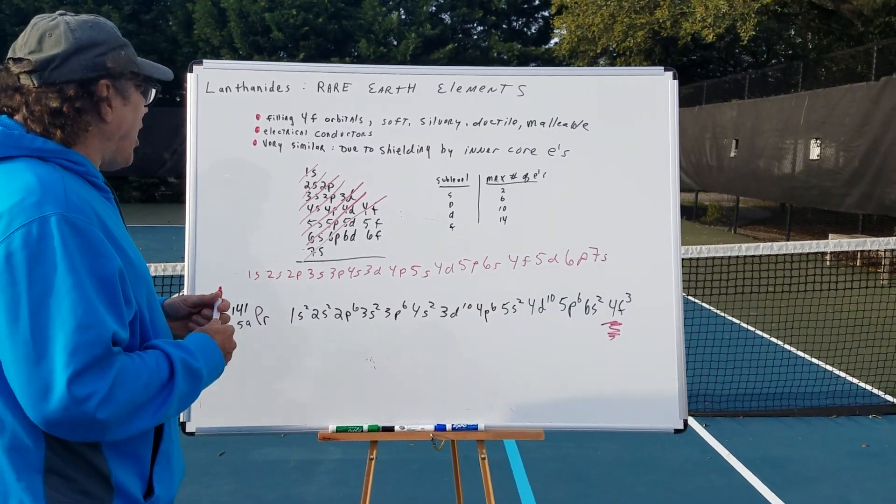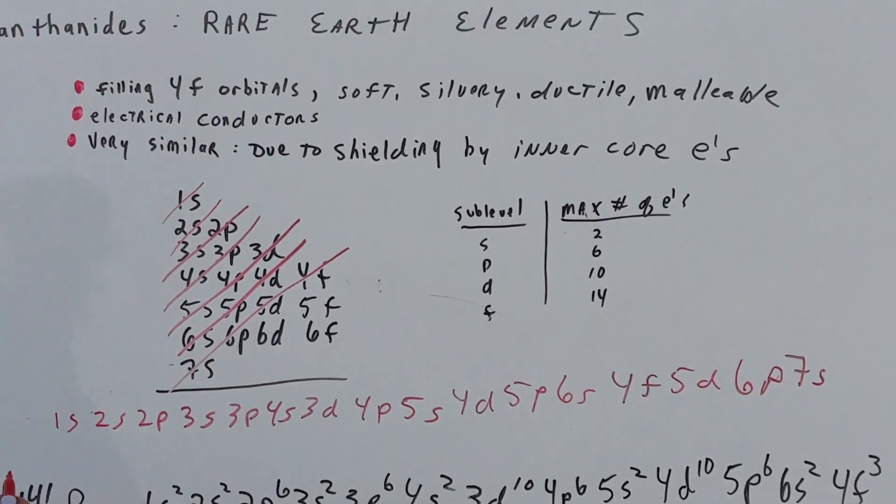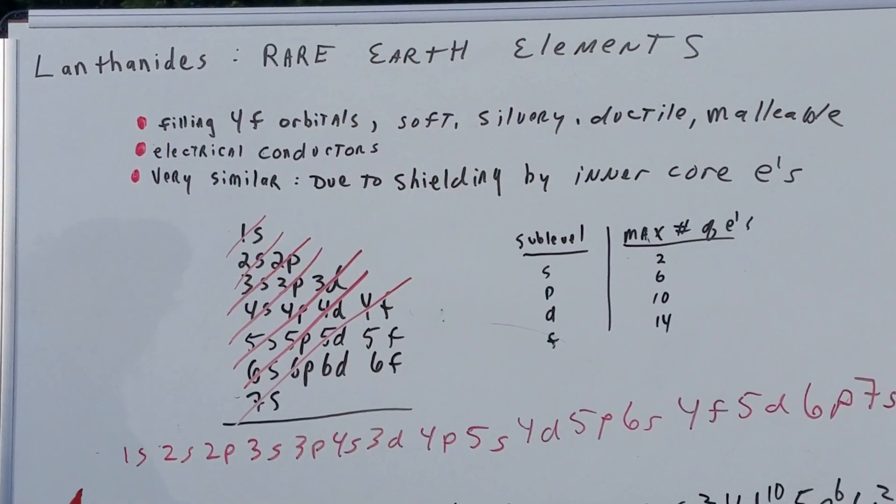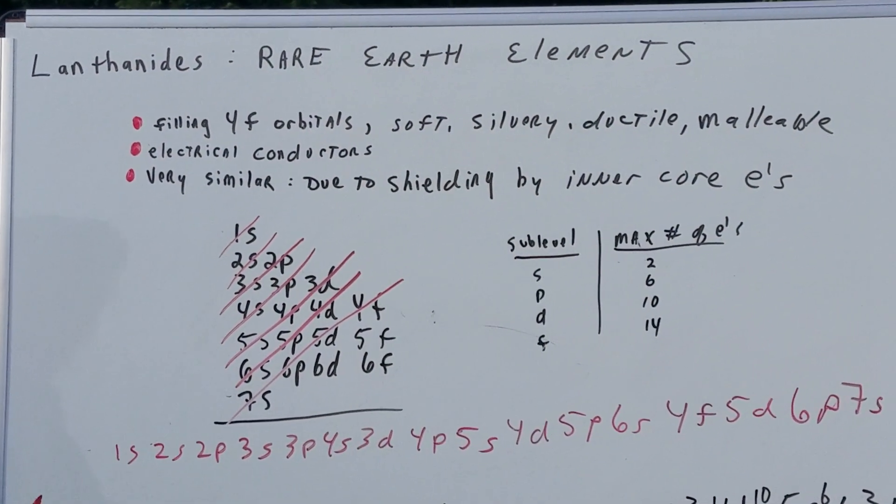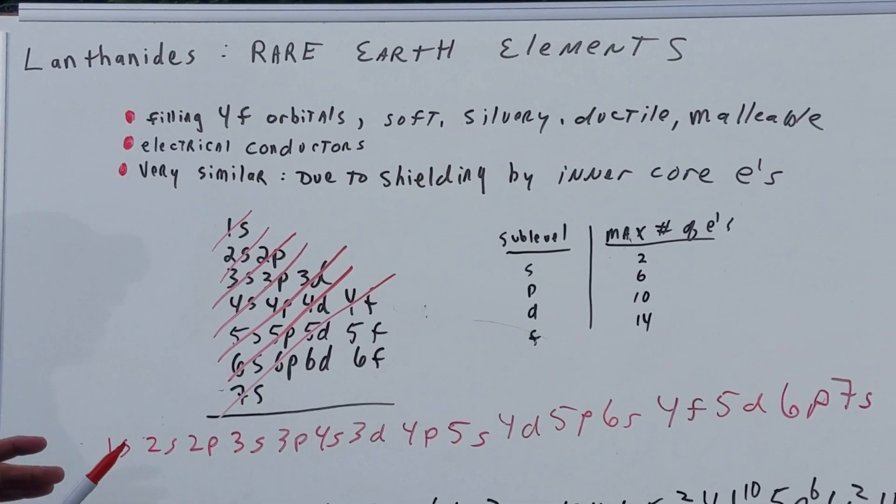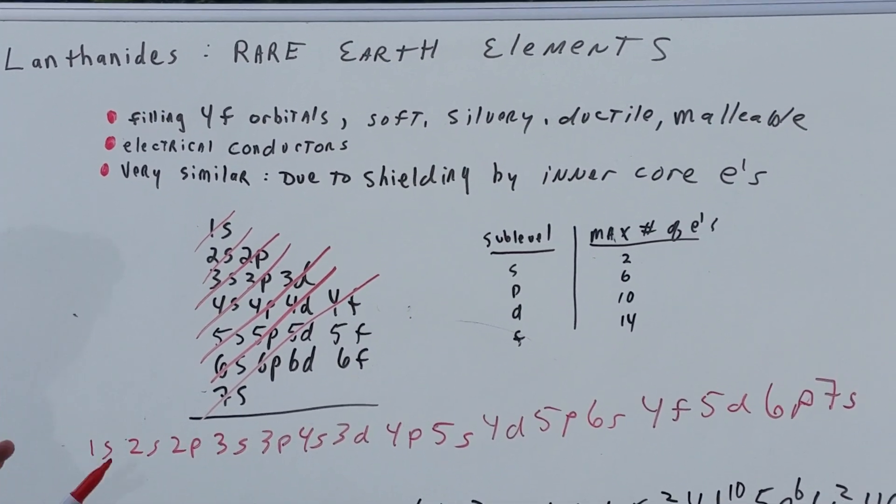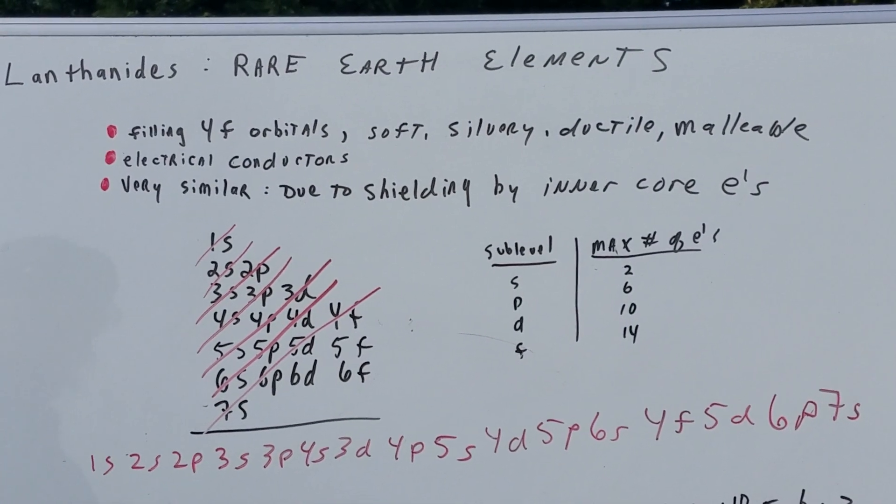We're gonna talk about the lanthanides. Now, I want you to listen to me very carefully. The lanthanides are also known as the rare earth elements. Along with the actinides, they sometimes call them the inner transition elements. So you got to be a little careful of the verbiage.